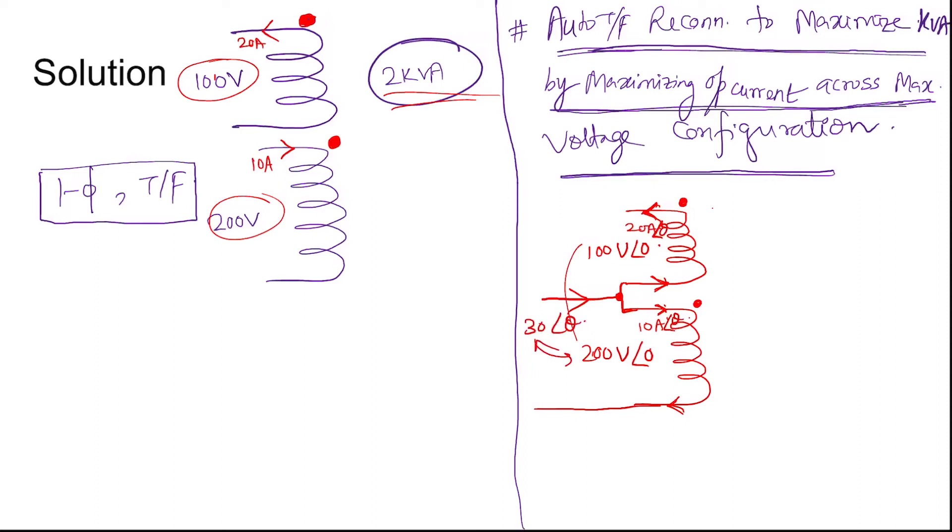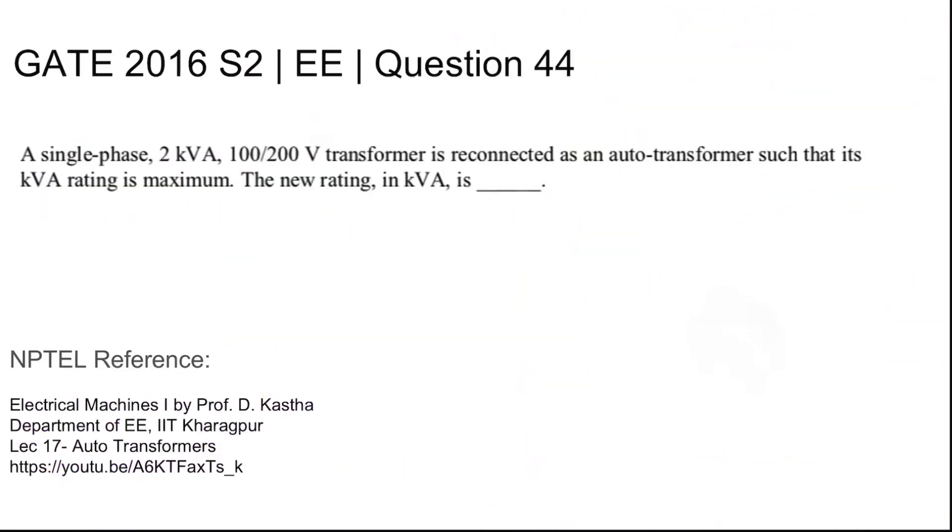And the kVA output will be 30 times 200. This is the magnitude of kVA, so 6 kVA output. So this is the maximum kVA, so new rating is 6 kVA. This is the answer. Thank you.